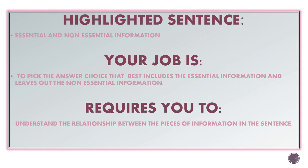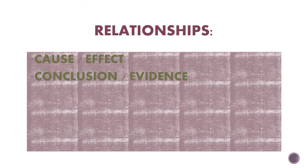The highlighted sentence will have both essential and non-essential information. Your job is to pick the answer choice that best includes the essential information and leaves out the non-essential information. Answering this type of question will require you to understand the relationship between the pieces of information in the sentence. Often there's an important cause-effect relationship, or there may be a conclusion based on some evidence, so look for those same ideas in the answer choices.